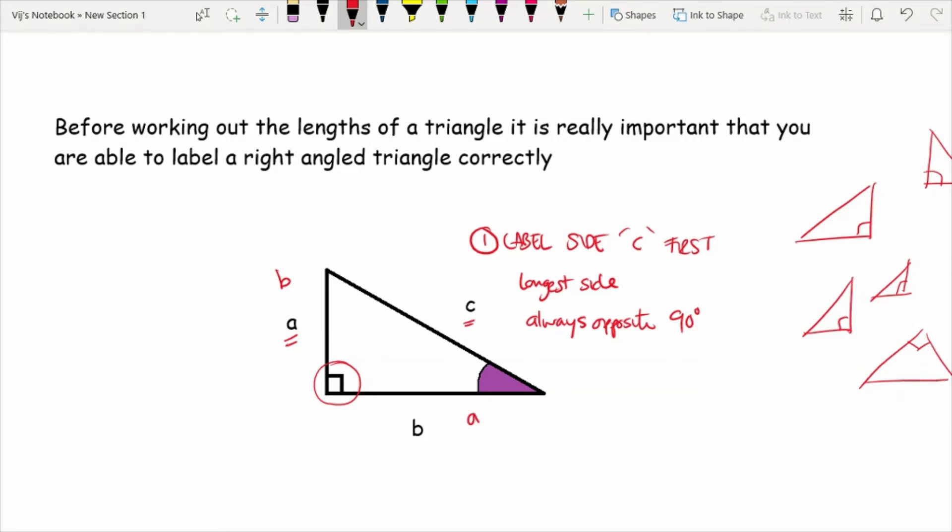So the labeling of A and B has no major significance to what we're going to be doing. The most important thing you need to be able to spot is what C is. And C is always the longest side of the triangle. Although that's a very good rule to have, I always say that it's always opposite the 90 degrees.